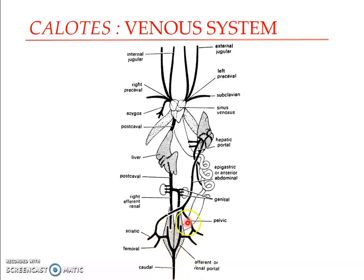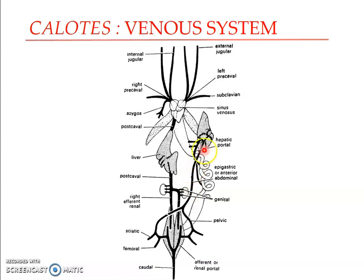So the caudal vein enters the body, divides into two renal portal veins, and each renal portal vein gives off a pelvic vein. The pelvic vein on its way receives blood from the hind limbs through the sciatic and femoral veins. Anteriorly, the two pelvic veins join together and form a median epigastric vein. This epigastric vein enters the liver and breaks up into capillaries. You can see the two pelvic veins have joined together, formed the epigastric vein, which enters the liver and gives off many capillary branches.